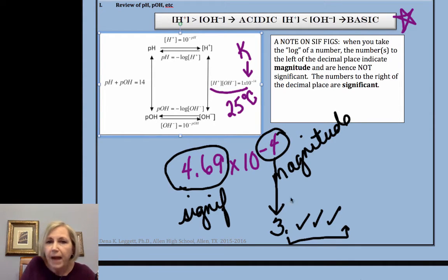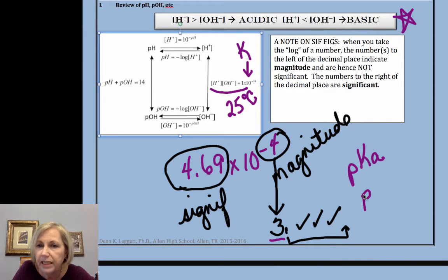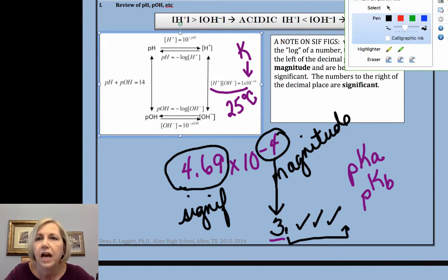So the power in scientific notation is magnitude, not significant. The number in front of the decimal, when you have a pH or a pOH, or we're also going to do pKa's, and we're going to do pKb's, and that just means take the negative log of the equilibrium constant. For all of those, the number in front of the decimal is not considered significant.